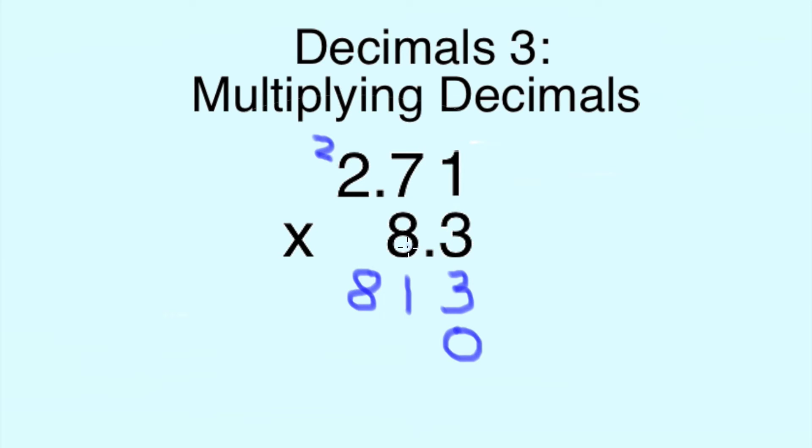Carrying on as we did with 3, 8 times 1 is 8, 8 times 7 is 56, so 6 and carry the 5 up here. We can cross that out, we don't need it anymore.